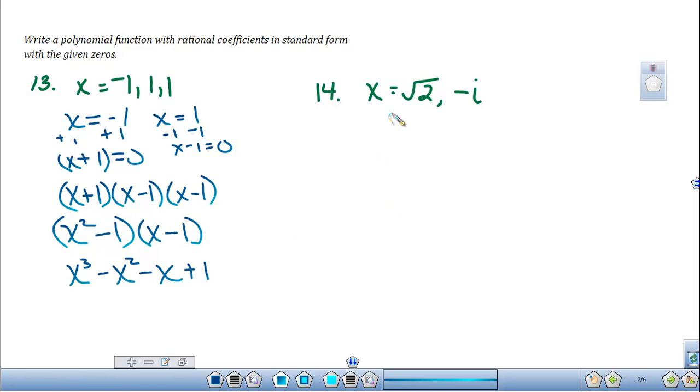Now number 14, it looks a little bit tougher, and it does have its challenges. First thing we need to know is that if you recall that if one of your roots or zeros is an irrational number, then its conjugate is as well.